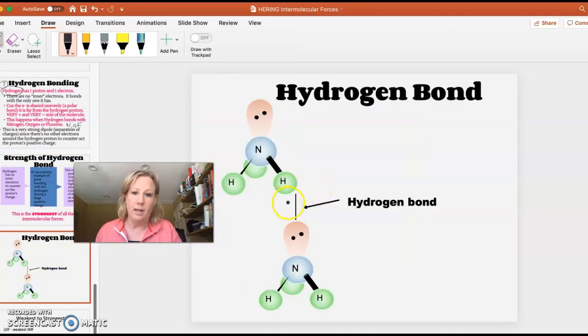Here's an example of a hydrogen bond. This poor little hydrogen only has the one proton and the one electron.